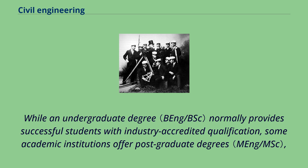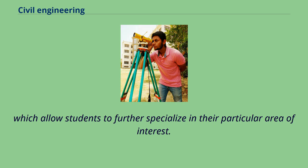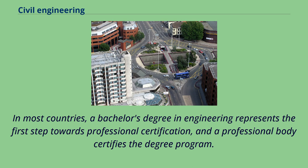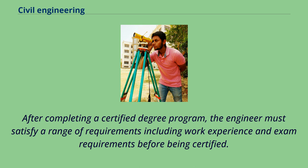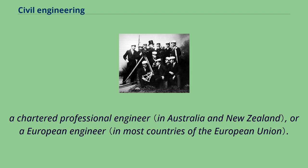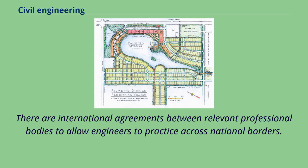While an undergraduate degree normally provides successful students with industry-accredited qualification, some academic institutions offer post-graduate degrees, which allow students to further specialize in their particular area of interest. In most countries, a bachelor's degree in engineering represents the first step towards professional certification, and a professional body certifies the degree program. After completing a certified degree program, the engineer must satisfy a range of requirements including work experience and exam requirements before being certified. Once certified, the engineer is designated as a professional engineer, a chartered engineer, a chartered professional engineer, or a European engineer.